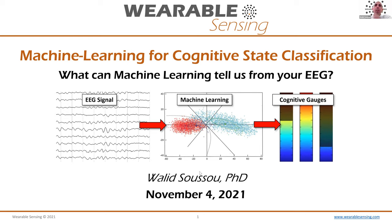That is hopefully what we'll get through. We will be describing and talking about a number of physiological features, but I'll focus a lot on EEG and how we can process that. We'll also discuss other physiological signals that can be used as well.